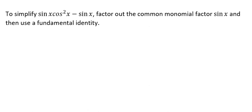In this example, we're going to be simplifying sin(x)cos²(x) - sin(x) by factoring out the common monomial factor sin(x), and then using a fundamental identity.